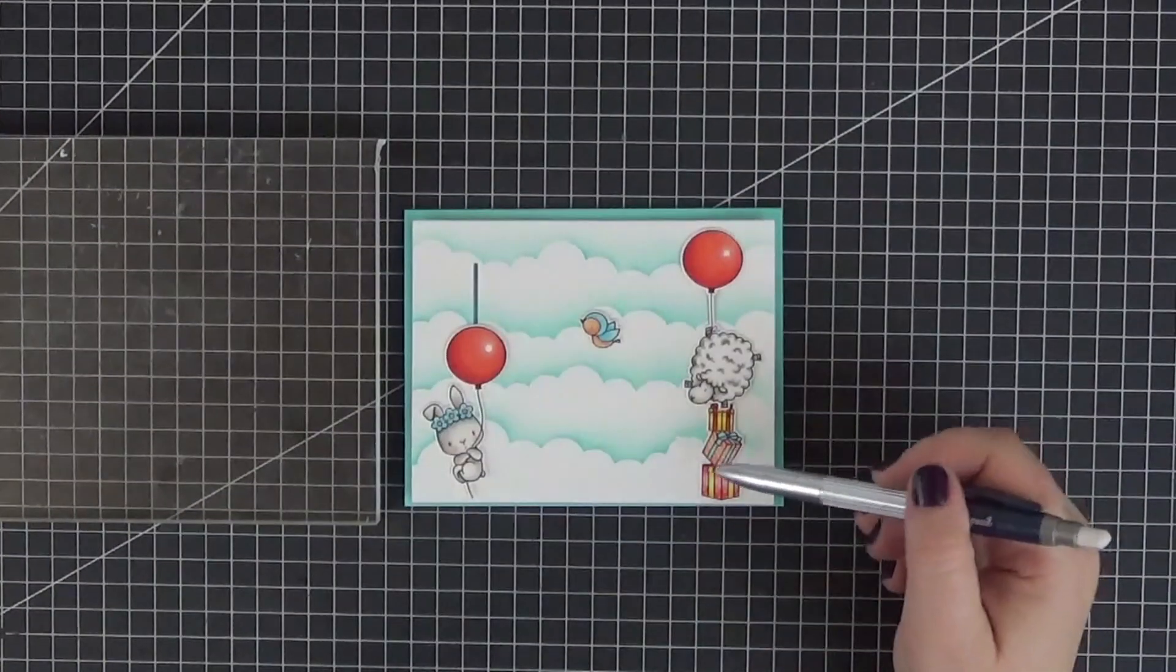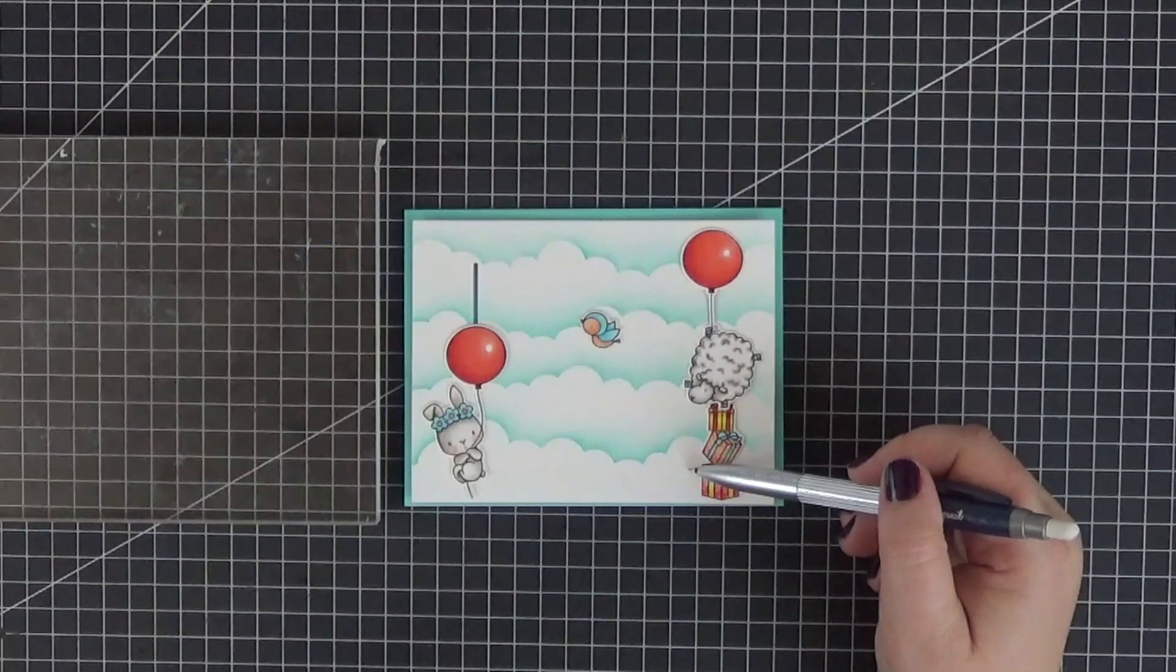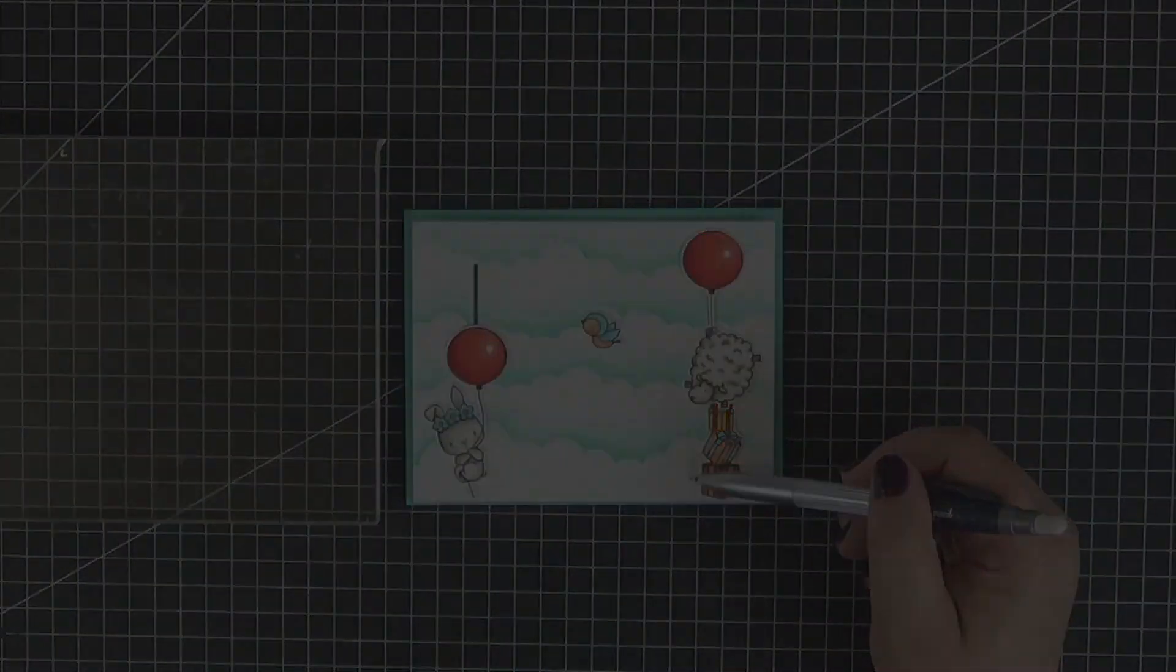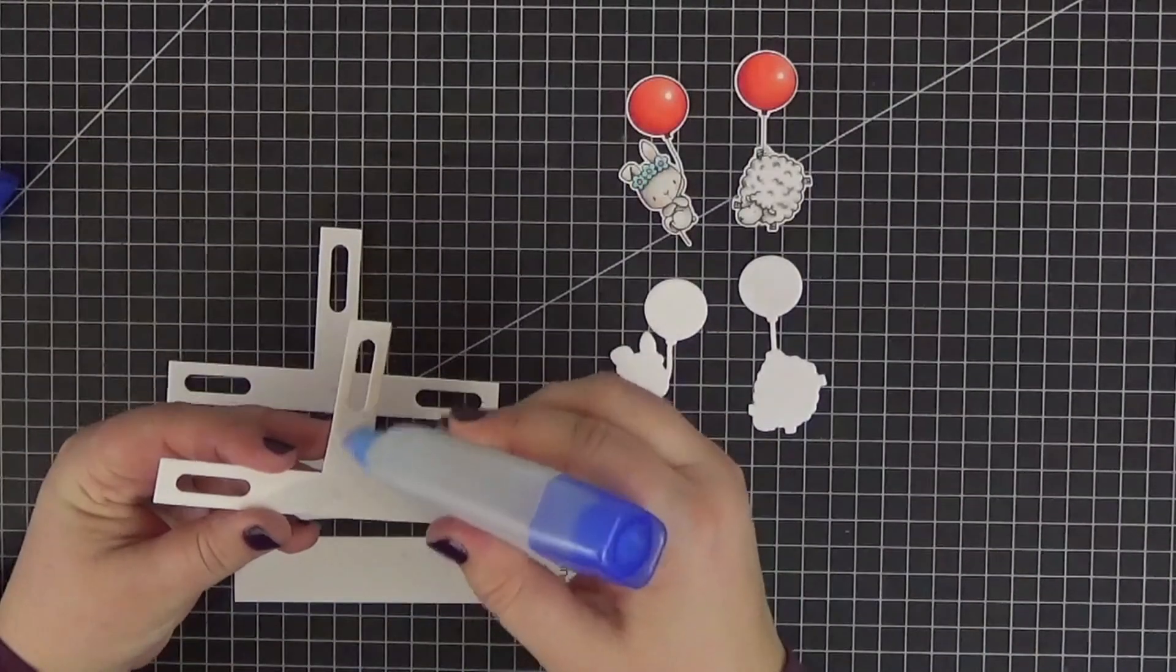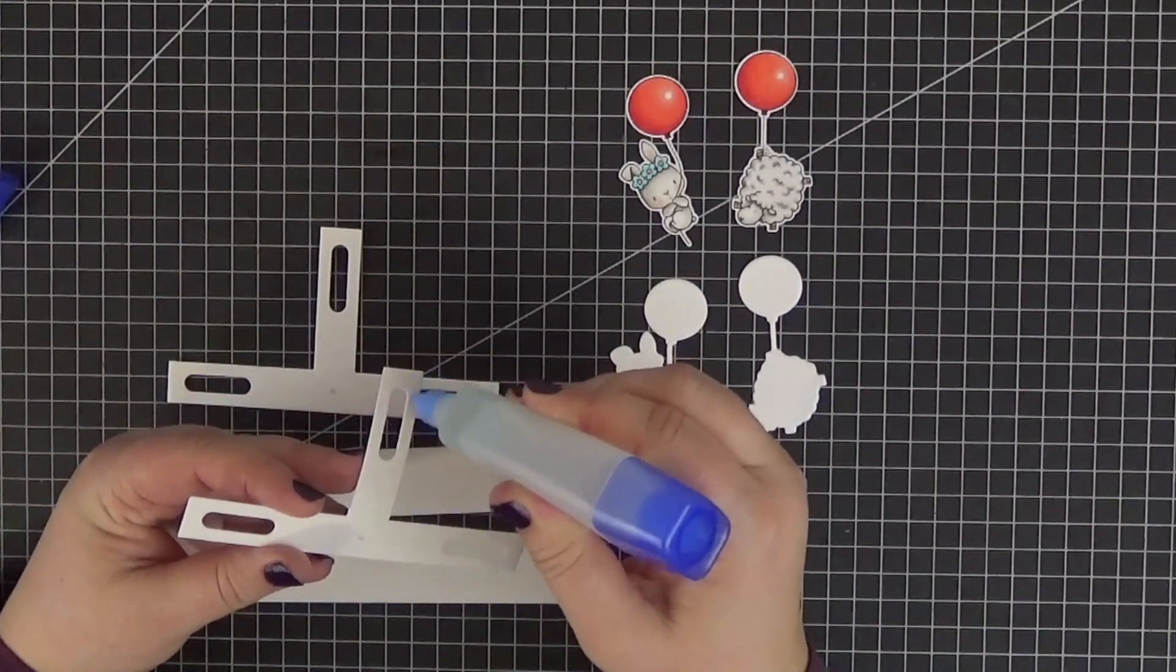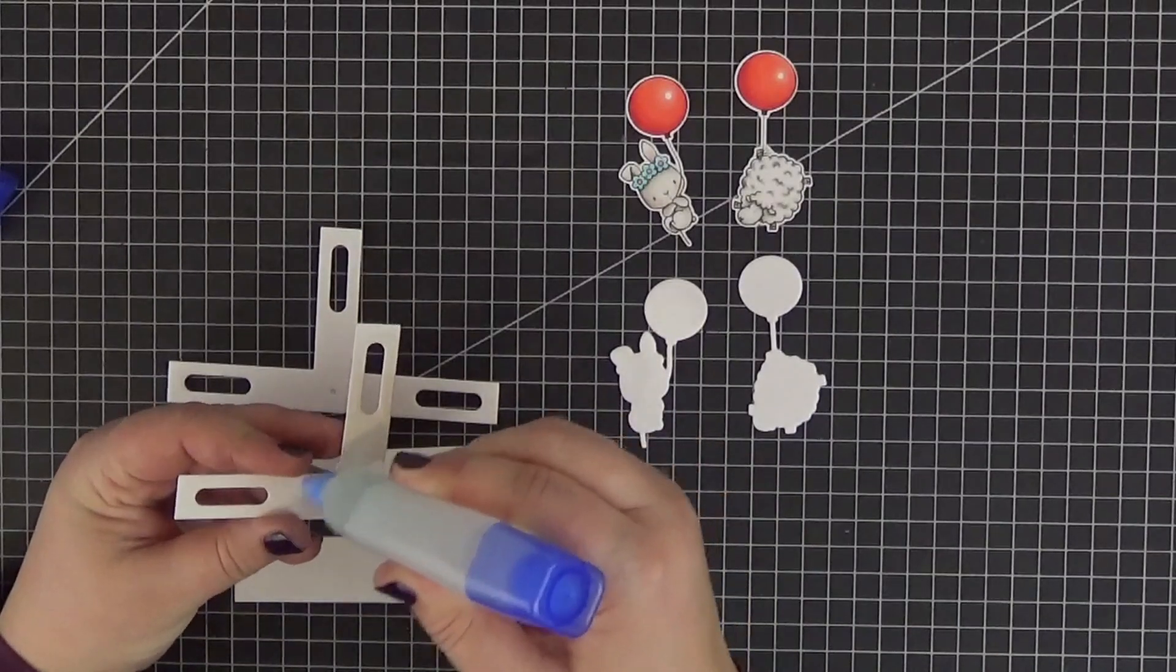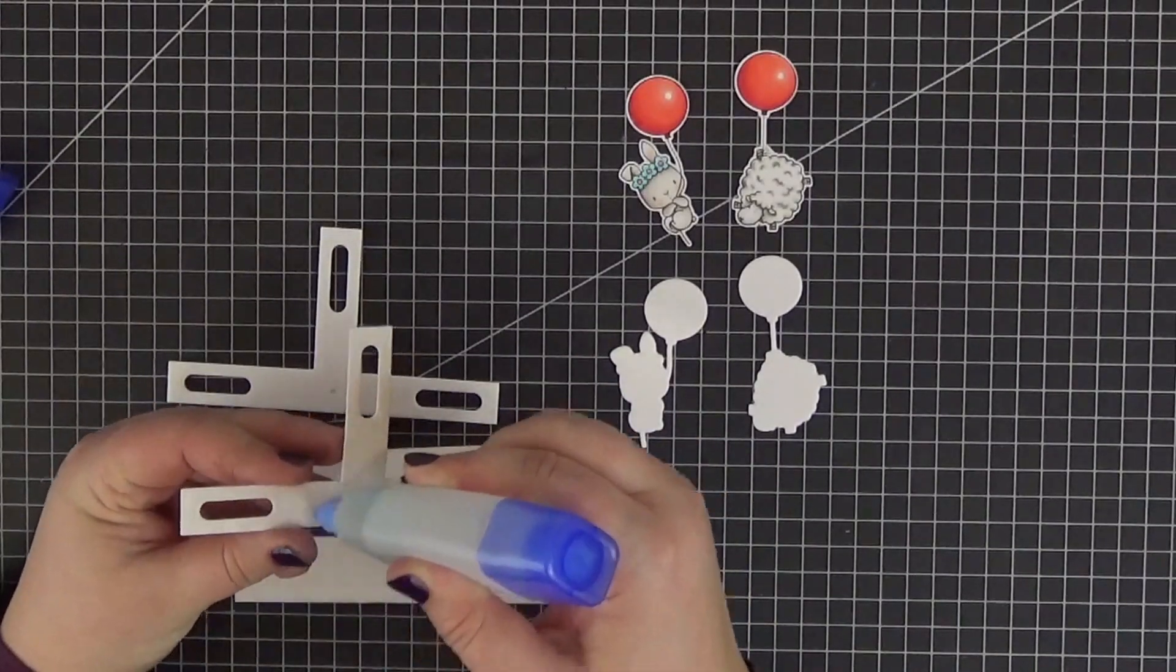After marking the panel with a pencil I stamped the sentiment off camera with extreme black hybrid ink. I also die cut all of the elements from the interactive up and down dynamics out of smooth white cardstock. Some of them need two layers to be sturdy enough.